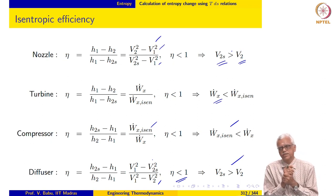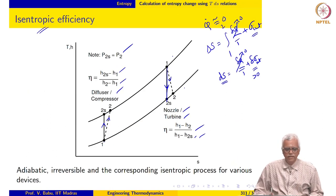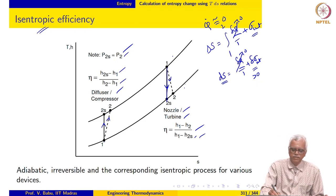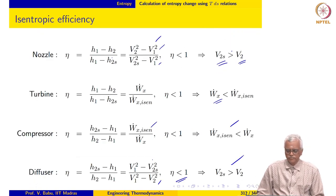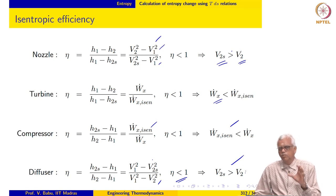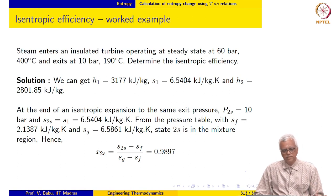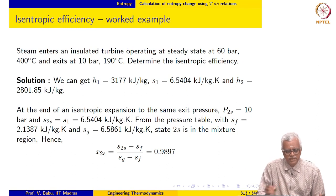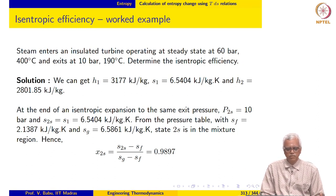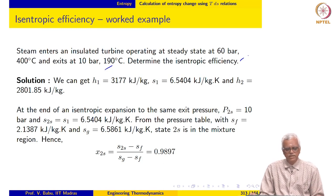The basis of comparison is the same final pressure, with the same initial state. The explanation is a little more involved in the case of the diffuser and requires more careful thought. Let us now work out a few examples involving the concept of isentropic efficiency. Steam enters an insulated turbine operating at steady state at 60 bar, 400°C, and exits at 10 bar, 190°C. Determine the isentropic efficiency. From the given information, we can infer that the steam is superheated at both inlet and exit of the turbine.